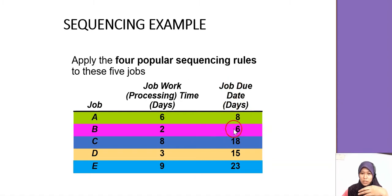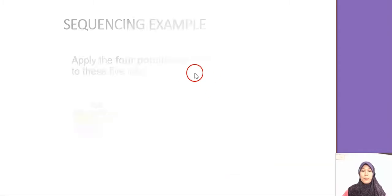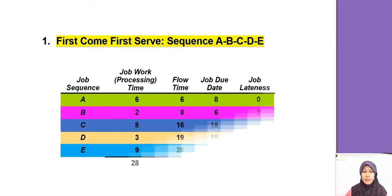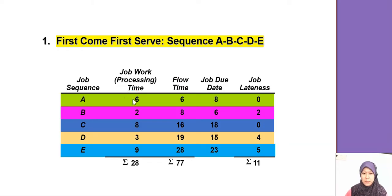Let's look at the first one, first come first serve. So the sequence is going to be A, B, C, D, E. It's following the job arrival. These are the processing times. So we add up, sum all the processing time, and then we need to do the flow time. How to do the flow time? We start with the first one, 0 plus 6, we have 6. And then 6 plus 2, we have 8. 8 plus 8, we have 16. 16 plus 3, we have 19. And 19 plus 9, we have 28.